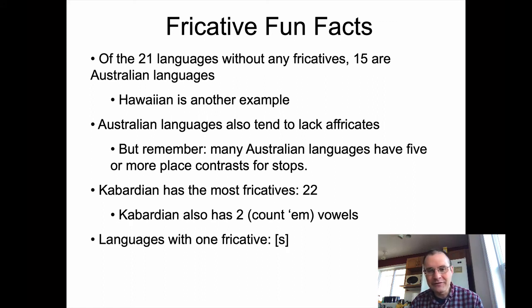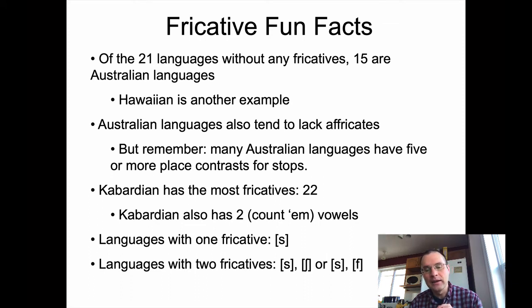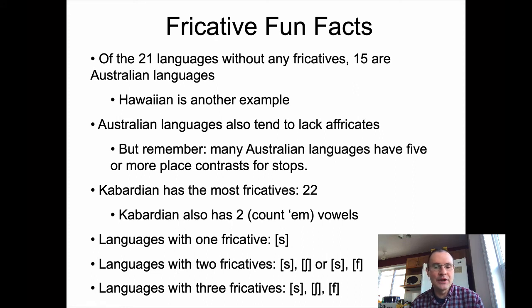If a language has one fricative, that fricative will tend to be S — the most popular choice, probably because it's so acoustically distinct. If a language has two fricatives, it'll probably add Esch or perhaps F. Usually a language will pick the voiceless fricatives before starting on voiced fricatives, because fricatives are obstruents and are not as easy to voice as sonorants. So it's easier to stick with the voiceless ones like S, Esch, or F.